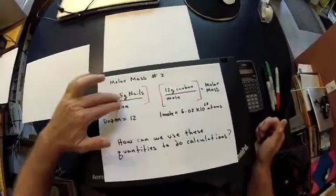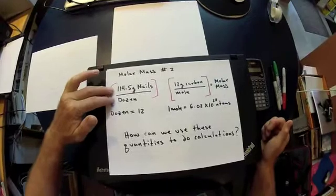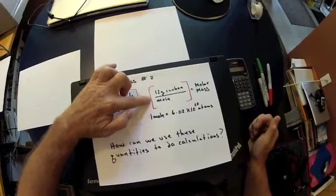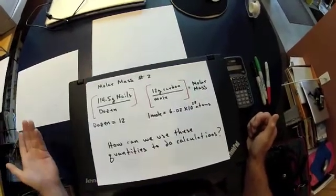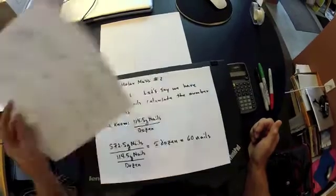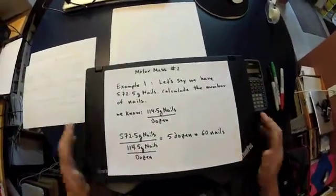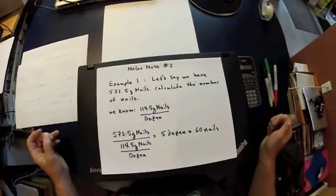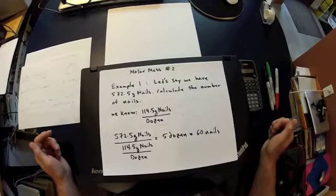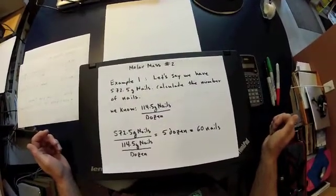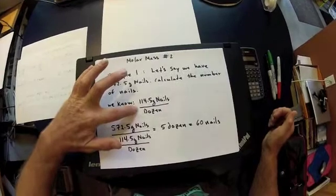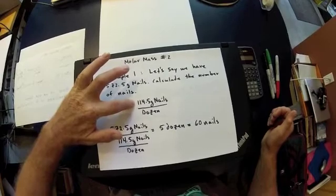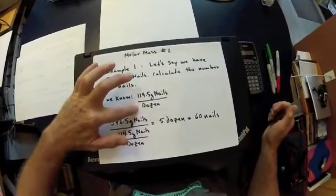Today we'll use these quantities to do calculations — first using the nail relationship to warm up, then doing mass calculations for carbon and sodium. In example number one, we have 572.5 grams of 16-penny nails and want to know how many nails are in that mass. We use the relationship that 114.5 grams of 16-penny nails is exactly a dozen.